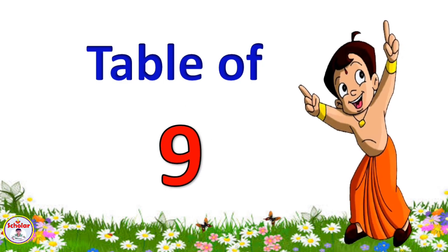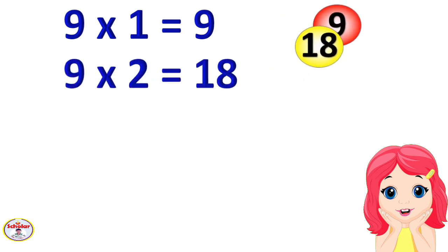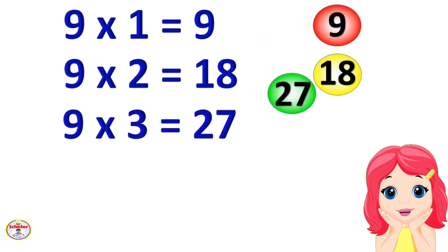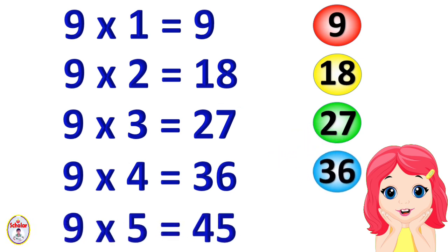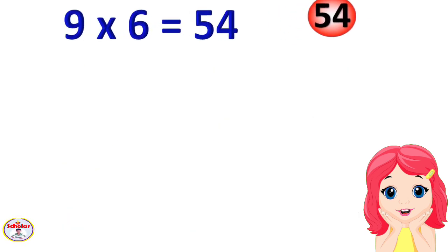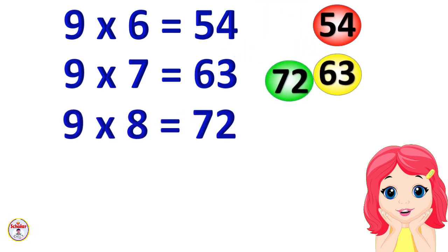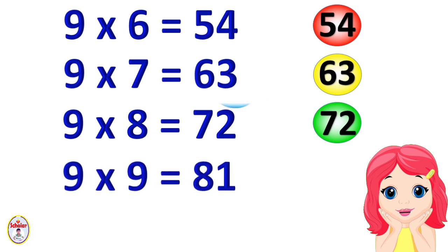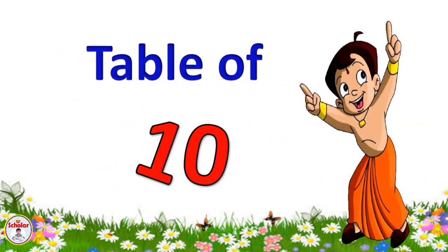Table of 9. 9×1=9, 9×2=18, 9×3=27, 9×4=36, 9×5=45, 9×6=54, 9×7=63, 9×8=72, 9×9=81, 9×10=90.